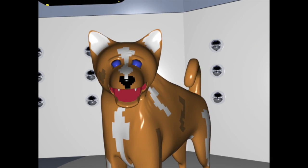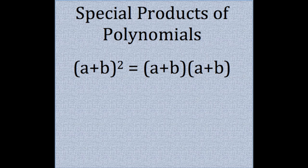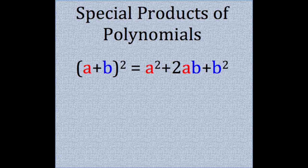Yeah. Now, let's look at the second special product of polynomials. First, remember that the binomial (a+b)² is the same as (a+b)(a+b). In this pattern, we have the same binomial with addition multiplied by itself.